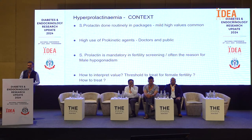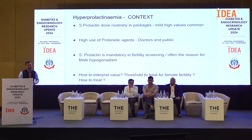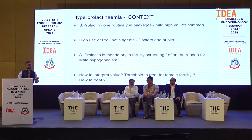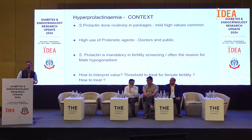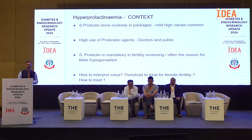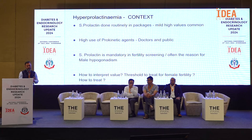Next we move on to hyperprolactinemia. We are seeing this regularly in practice because prolactin is being included in lab packages. Sometimes we see high values. There is also very high use of prokinetic agents like itopride, domperidone, and similar drugs, which can lead to high prolactin. Prolactin is also done in many fertility screenings. How do we interpret these values? What is the threshold for female and male fertility, and how do we treat hyperprolactinemia?